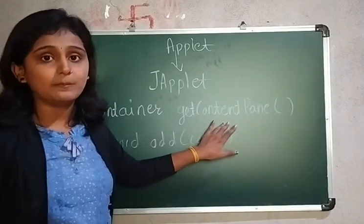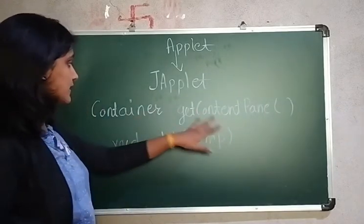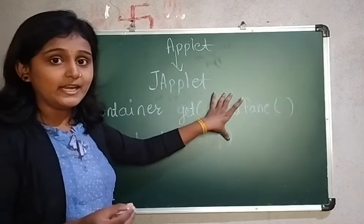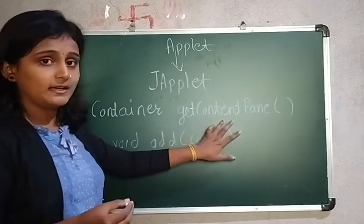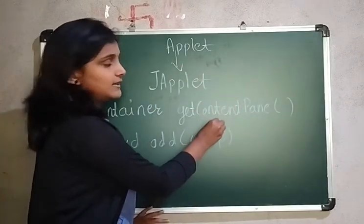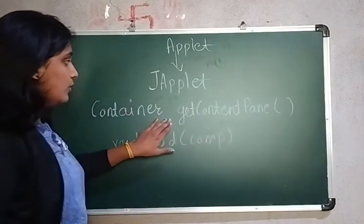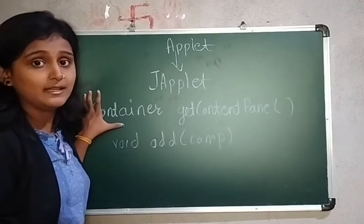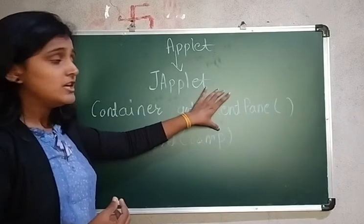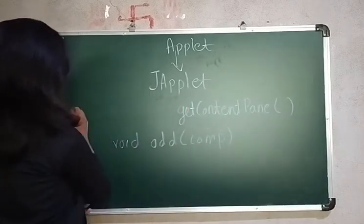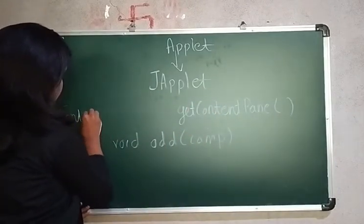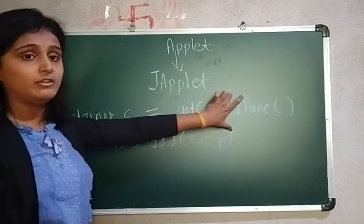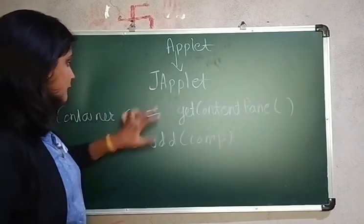To use the content pane, first you need to know what it is. For that you use this method: Container getContentPane(). Here you need to know the Container — what is the content pane — and after knowing that content pane, you have to call the add method on the content pane. The return type is Container.